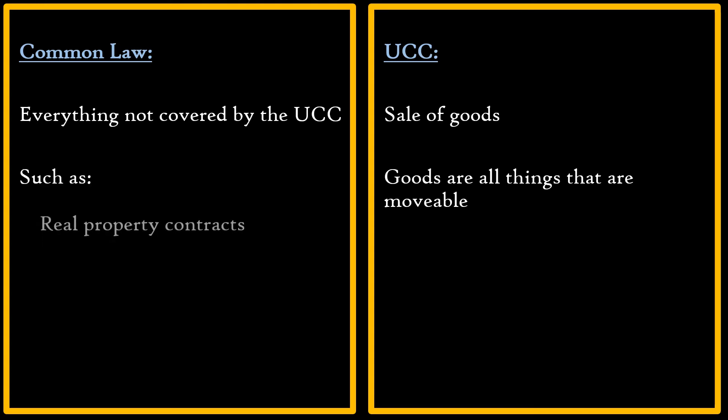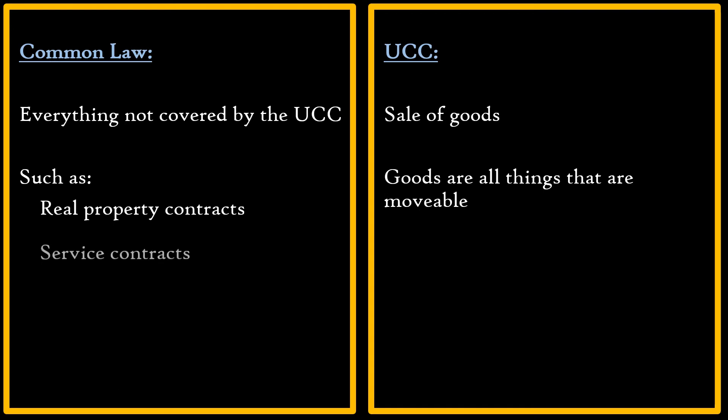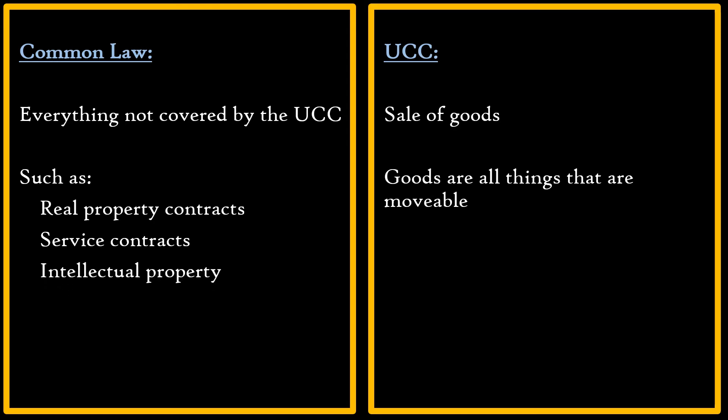Here are some examples of contracts governed by the common law. Real property contracts — the sale or lease of real property — are governed by the common law. Service contracts are also governed by the common law; if it's a contract for any type of service, you go to the common law first. Another example is intellectual property: a license of a patent, trademark, or copyright — the license of those rights — will be governed by the common law.